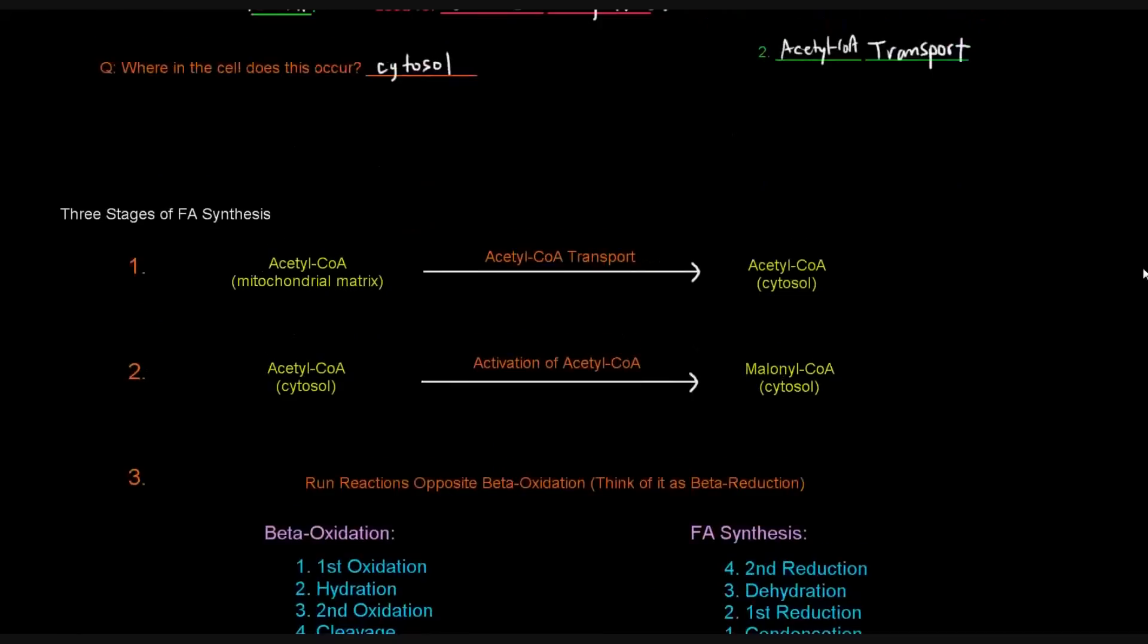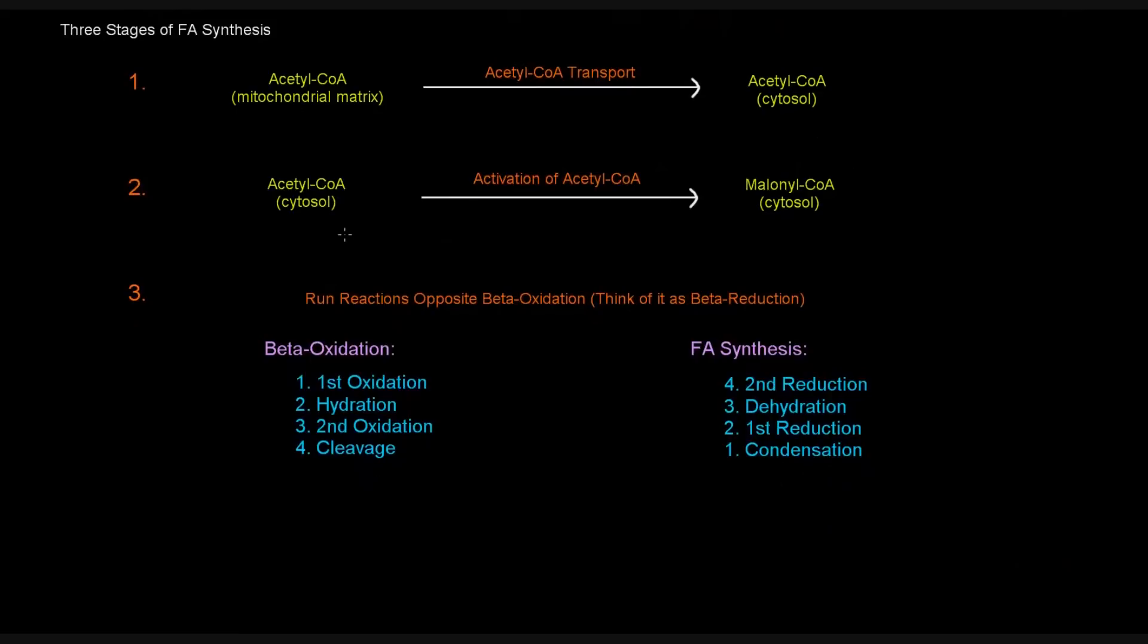Fatty acid synthesis occurs in three stages. We have to think about linking a bunch of these acetyl-CoAs together to make a fatty acid. Where do these acetyl-CoAs come from? Where is acetyl-CoA normally made? It's made in the mitochondria. That's a bit of an issue, because fatty acid synthesis occurs in the cytosol.